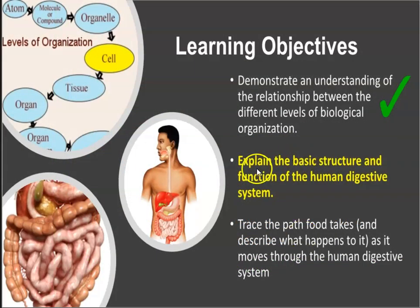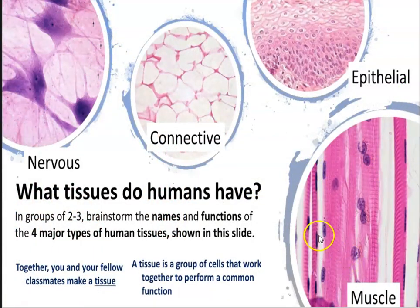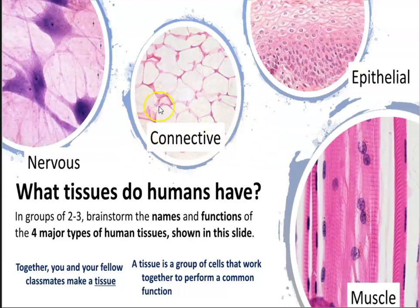Now we can move on to explain the basic structures and functions of the human digestive system. Within the body we have four major types of human tissues. We have nervous tissue composed of our neurons, found in the brain, spinal cord, and nerves. We have connective tissue in different types, from loose connective tissue to dense connective tissue — dense regular, dense irregular — as well as adipose tissue.